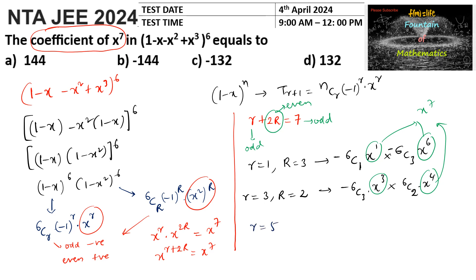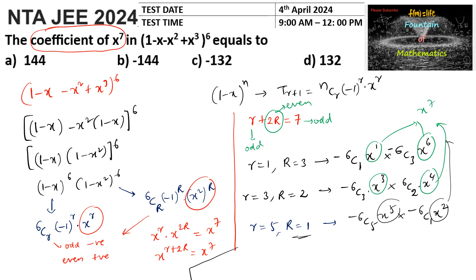The next case: when r equals 5 (odd), capital R equals 1, since 5 plus 2 equals 7. So we get minus 6C5 times x^5 times 6C1 times x^2, giving x^5 times x^2 equals x^7. The coefficient of x^7 in the given expansion is therefore: minus times minus gives plus 6C1 times 6C3, minus 6C3 times 6C2, and again minus times minus gives plus 6C5 times 6C1.